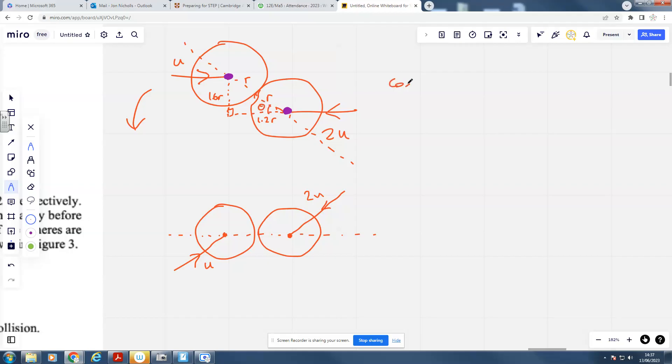Now I'd like to point out that if this is theta, then what we can say straight away is that cos theta is going to be opposite divided by hypotenuse, which gives you 1.2R over 2R. And that gives you 1.2 over 2, which is 3 fifths. Likewise, sine theta is 4 fifths.